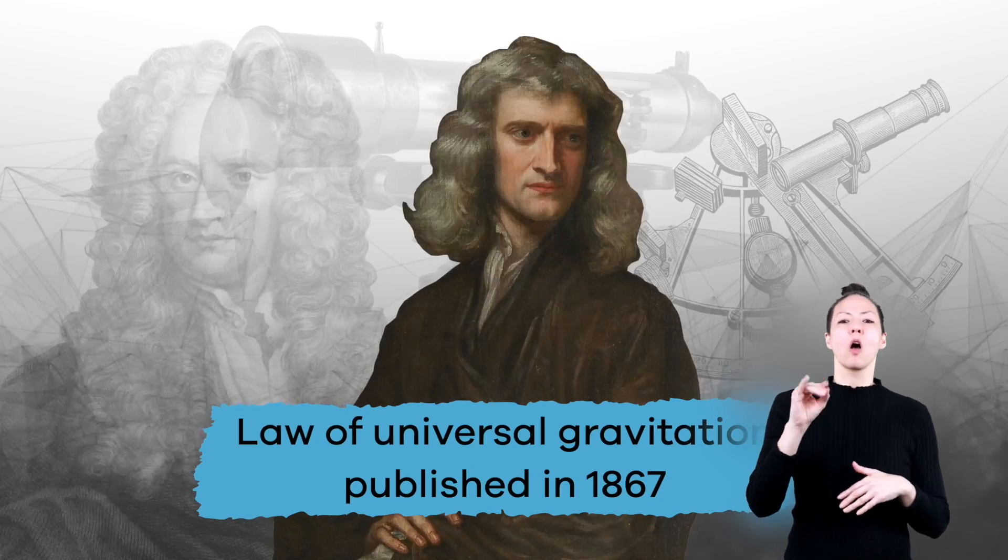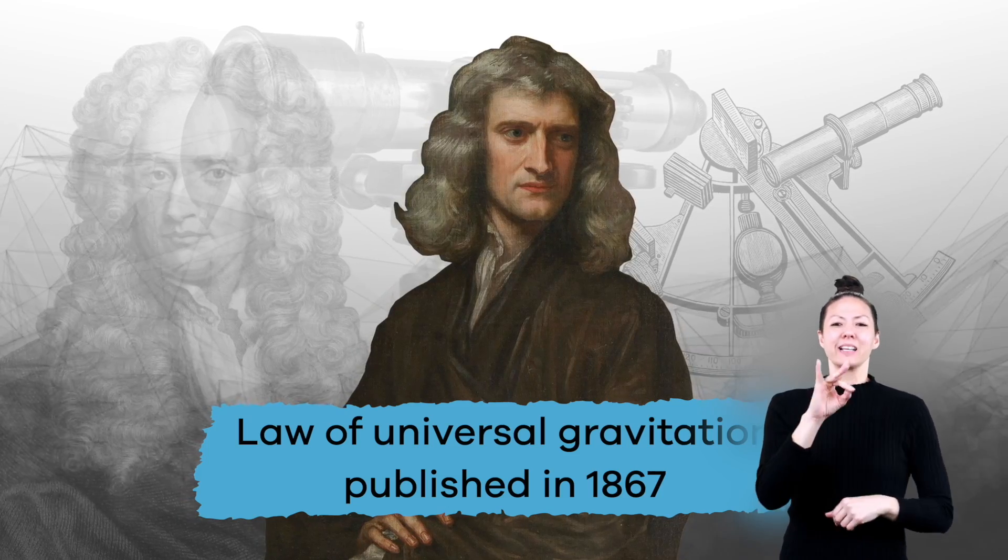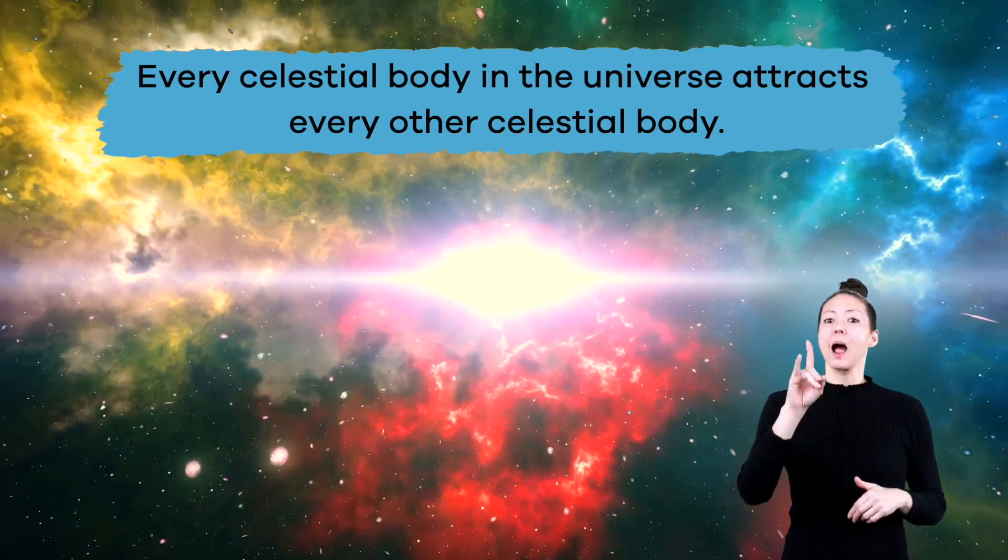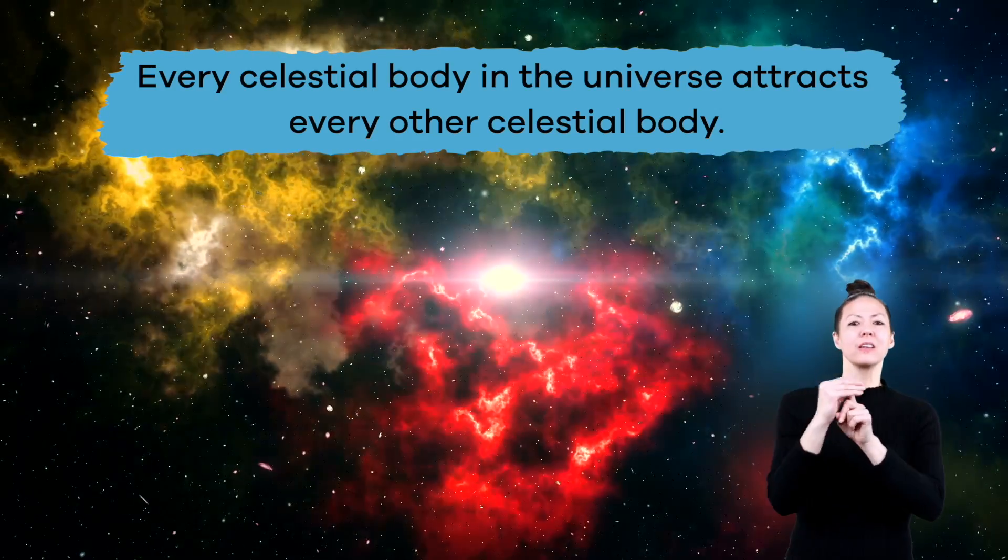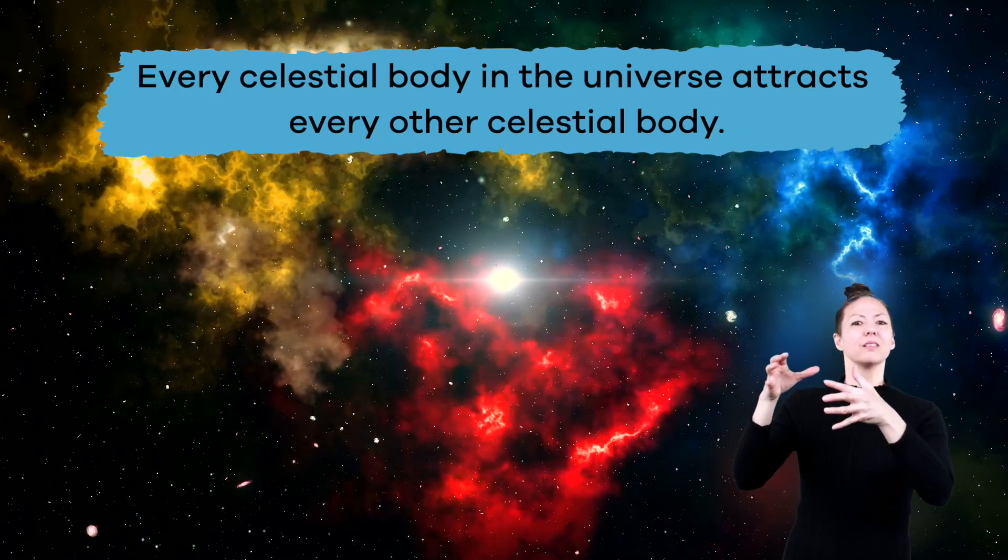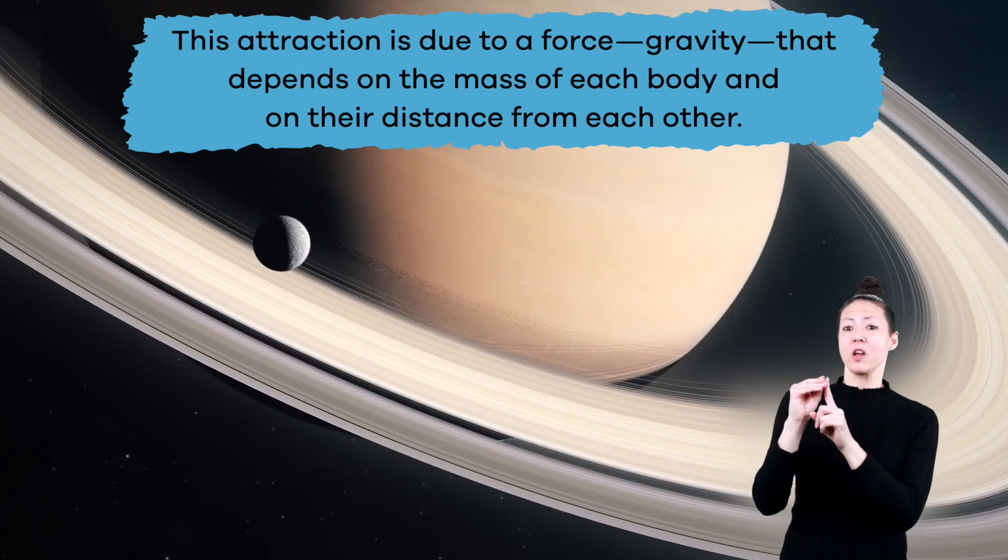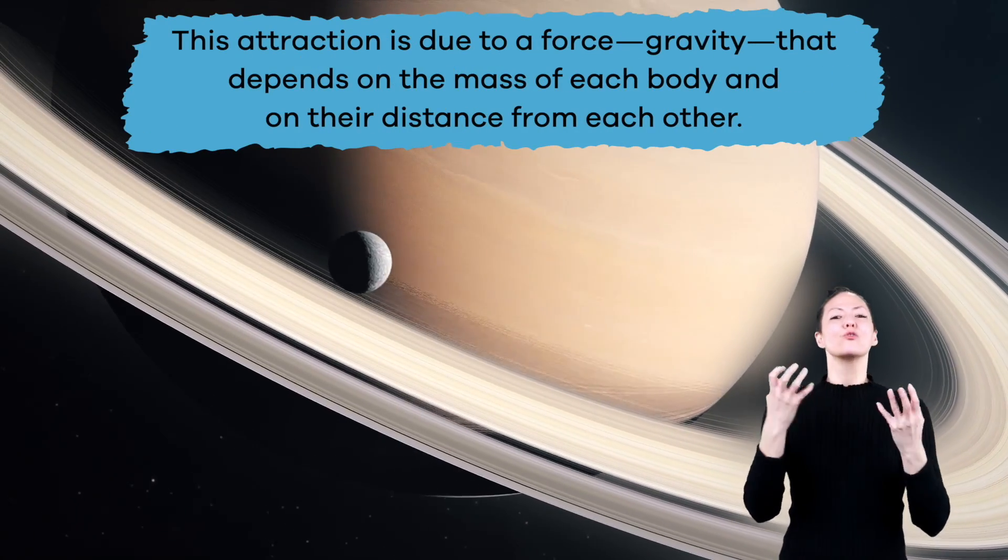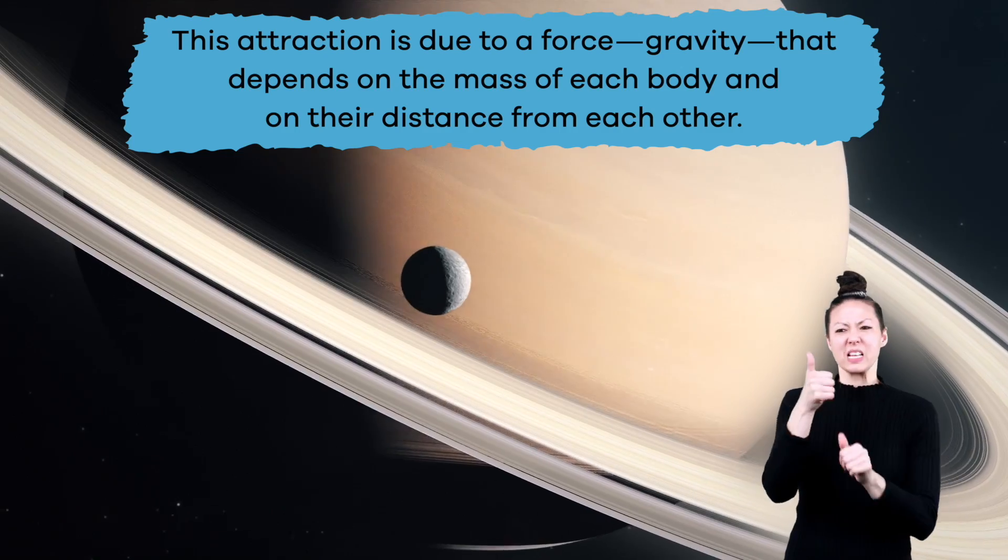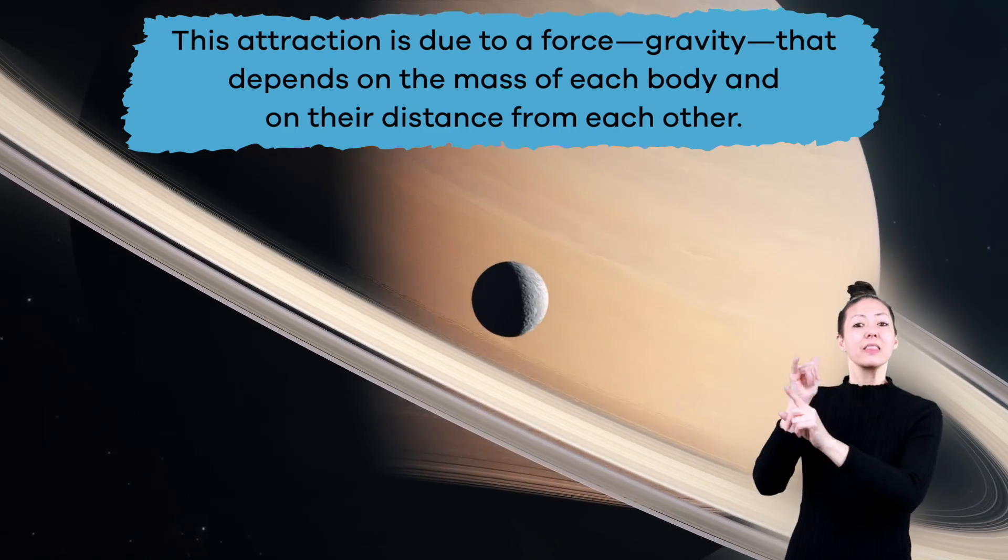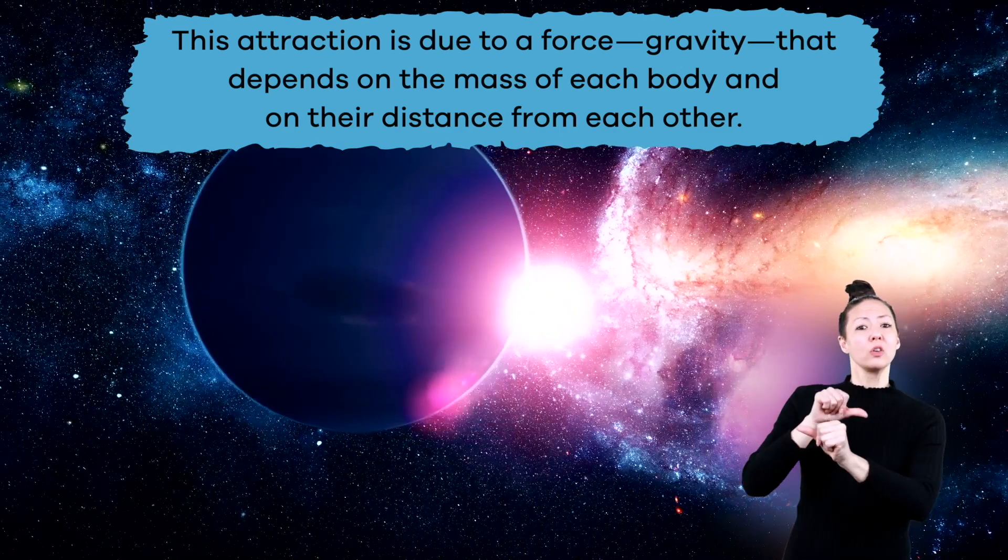Newton's Law of Universal Gravitation was published in 1867 and states that every celestial body in the universe attracts every other celestial body. This attraction is due to a force, gravity, that depends on the mass of each body and on their distance from each other.